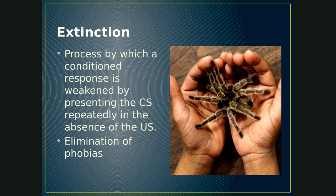Once you have a classically conditioned response, how do you get rid of it? To extinguish a classically conditioned response, you have to be exposed to the conditioned stimulus without the unconditioned stimulus. The conditioned stimulus predicts the presence of the unconditioned stimulus — for example, you predict that when you see a spider, you will be bitten. To get rid of that fear, you would have to be exposed to the CS — the spider — without being bitten.